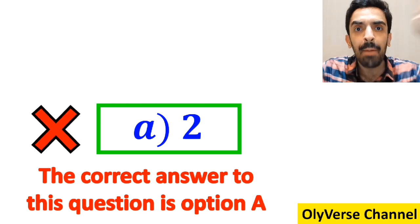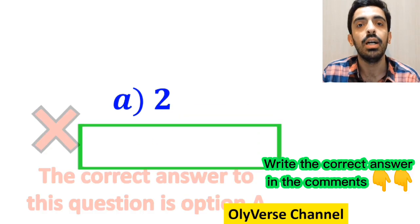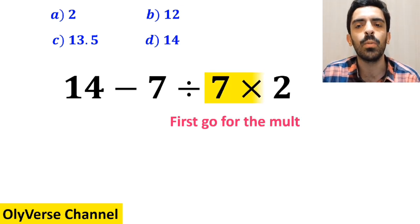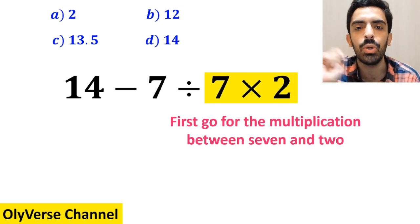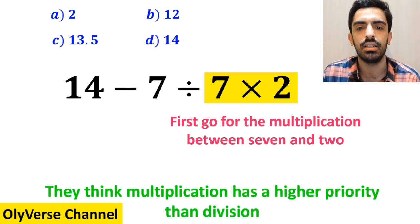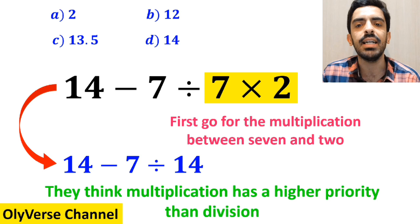However, this answer is absolutely wrong. Some other people first go for the multiplication between 7 and 2 because they think multiplication has a higher priority than division. So they rewrite this expression as 14 minus 7 divided by 14.